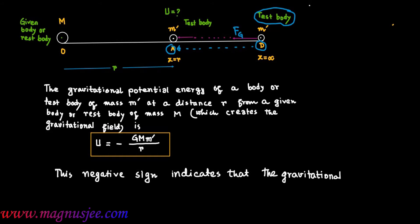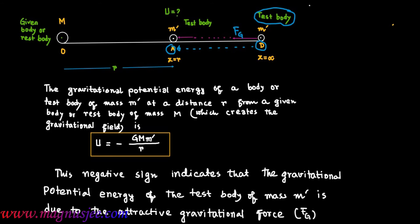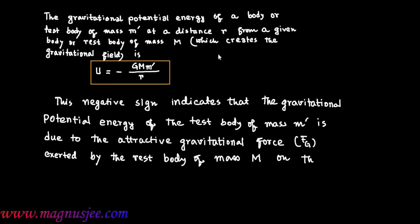The negative sign indicates that the gravitational potential energy of the test body of mass M' is due to the attractive gravitational force FG exerted by the raised body of mass capital M at point O on the test body at point A or at point D.